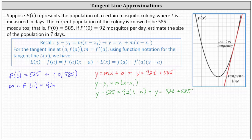And when using a tangent line to make an approximation, we often replace y with function notation, in this case, L of t. So we'll say L of t is equal to 92t plus 585.